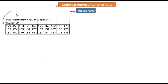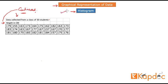You will observe that the variable we have defined — height — is a continuous variable in nature, because height can go from 155 to 155.5 centimeters or 161.2 centimeters, depending on the precision and accuracy of your measuring instrument. Whenever you have a data set depicting a continuous variable, that is when we use a histogram. It is different from a bar chart: a histogram is used when you have a continuous variable, while a bar chart is used when you have a categorical variable.